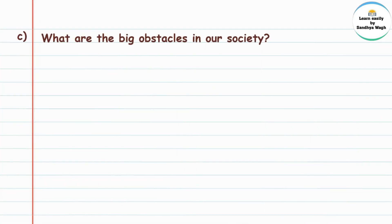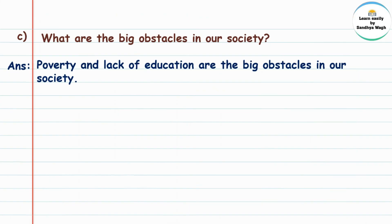Next, what are the big obstacles in our society? 'Obstacles' manje adathale. Aple samajatle konthe mothe adathale ahet? Answer: Poverty and lack of education are the big obstacles in our society. 'Poverty' manje garibi ani 'lack of education' manje shikshanacha abhav — garibi ani shikshanacha abhav he aple samajatile mothe adathale ahet.